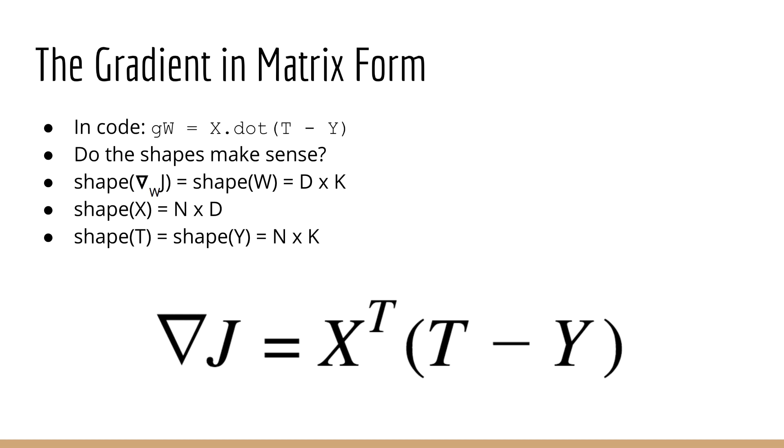First, we know that the shape of w is d by k, and therefore, the gradient should also be d by k. We know that x is of shape n by d, and we know that both the target and the predictions are n by k. So, ultimately, we have a d by n matrix multiplied by an n by k matrix. As you know from your linear algebra studies, the inner dimension disappears, so the resulting matrix is of size d by k as expected.